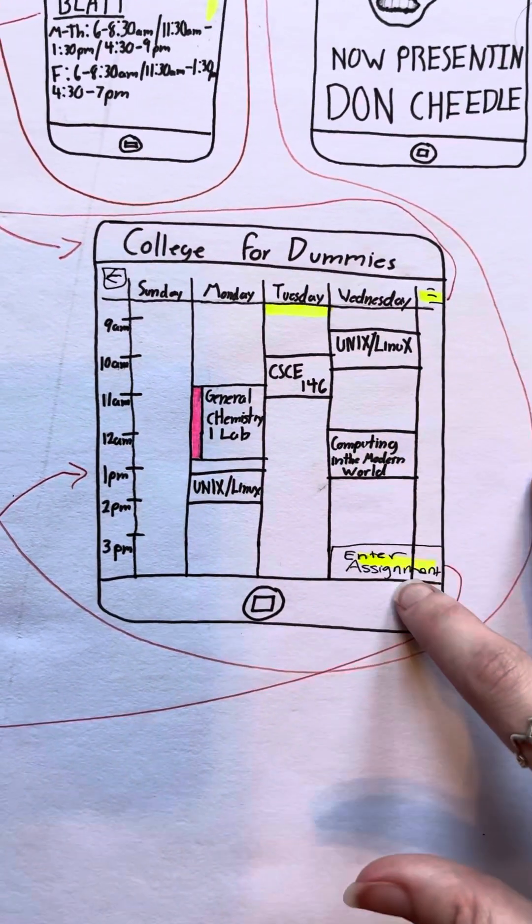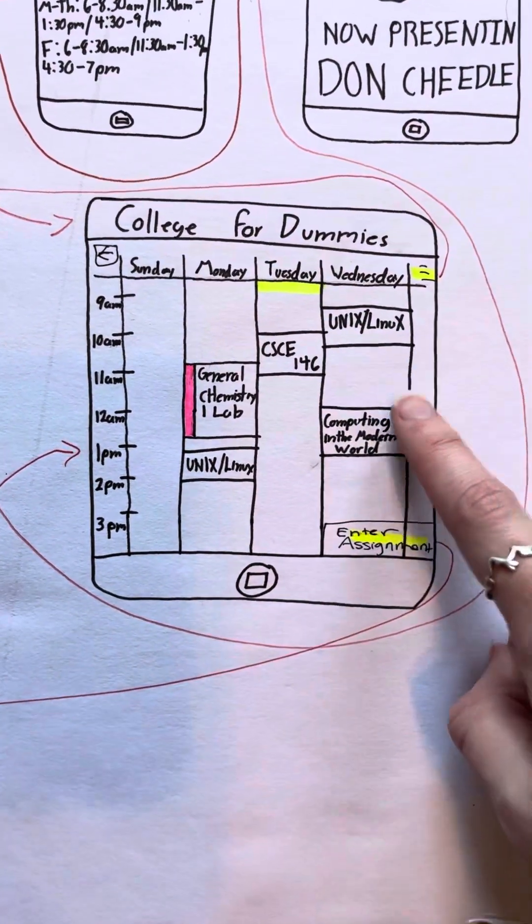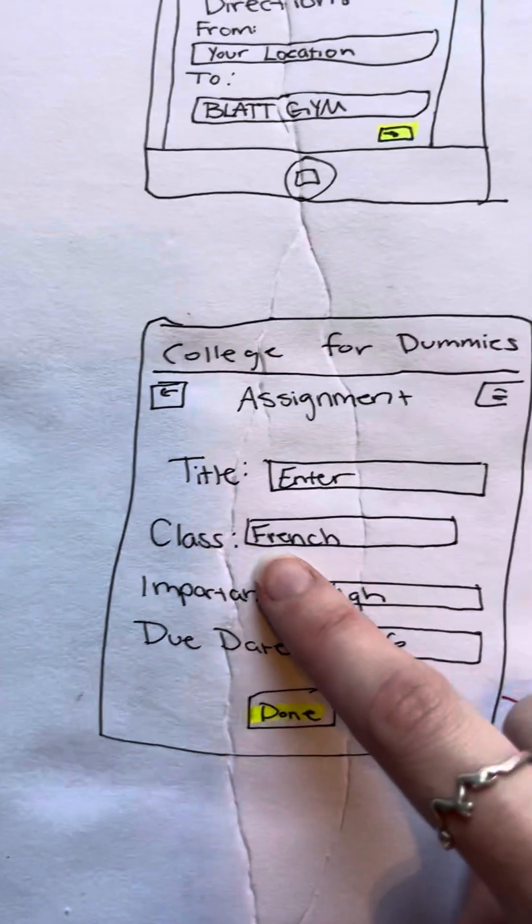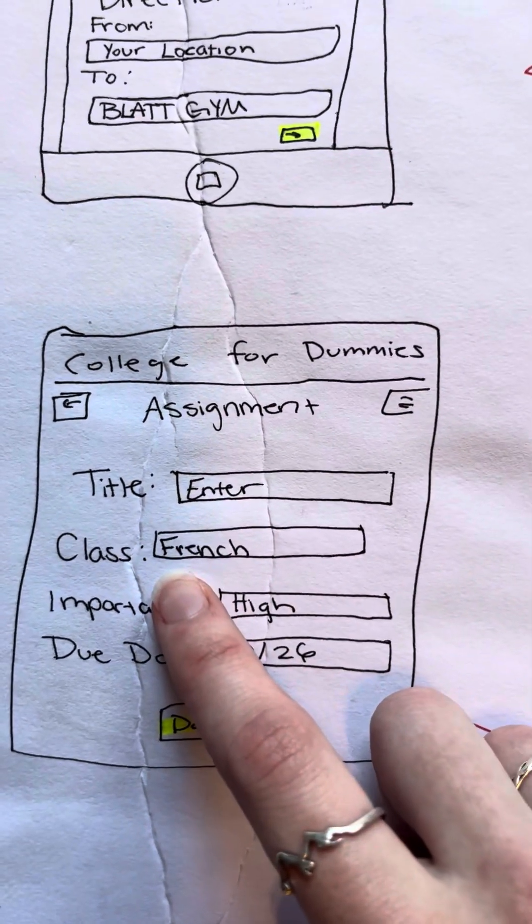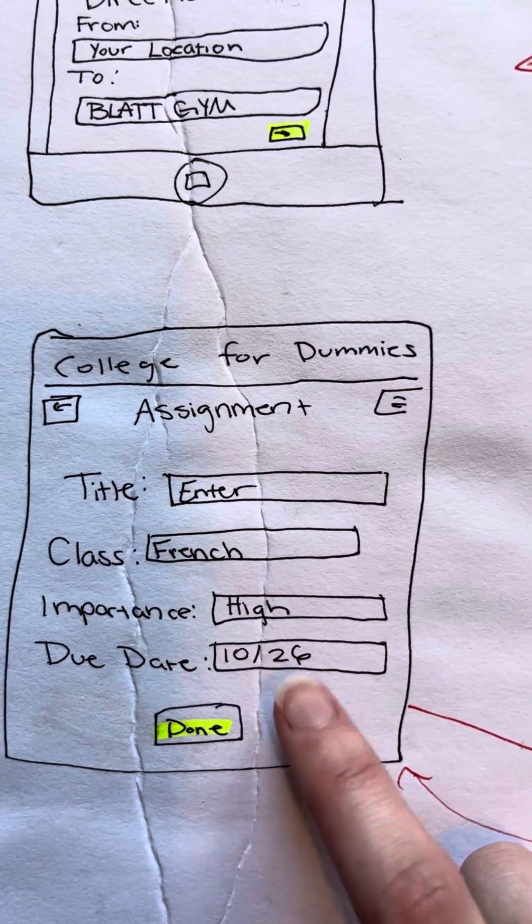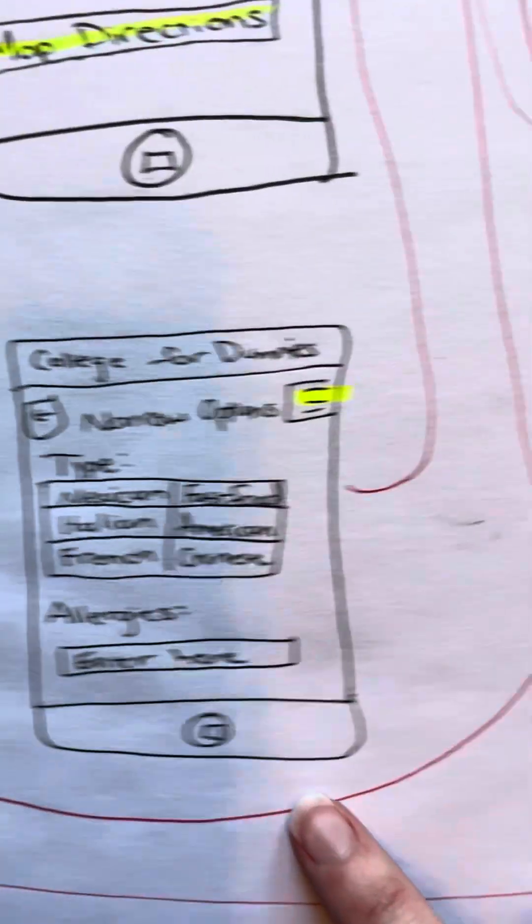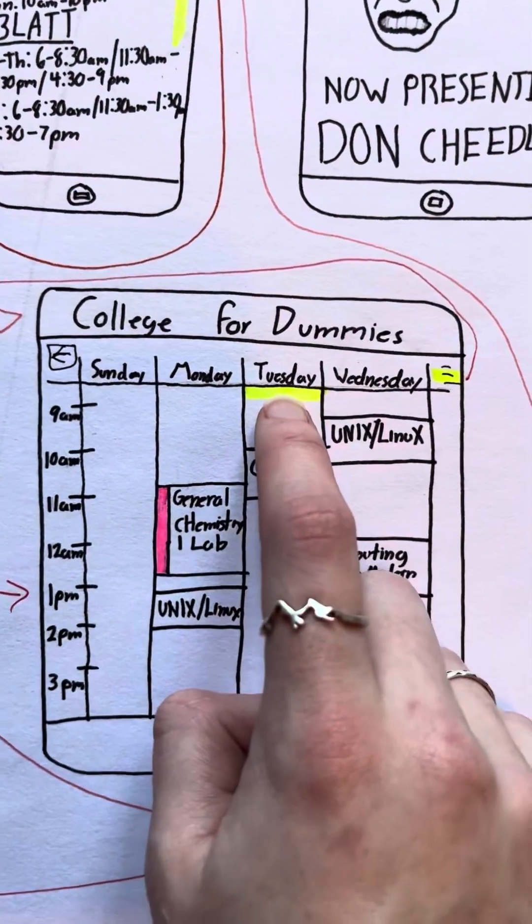You can then also enter in any assignments you have within the app itself. So you can enter in an assignment, and it'll ask for the title, the class it's for, the importance of it, and the due date to make sure you get it done. When you're done with that, you can take it back here, and it'll pop up at the top of the day it's due.